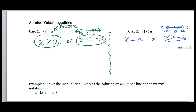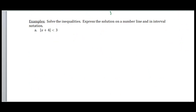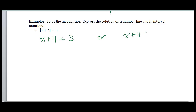Let's look at some examples. When we have these examples, we're going to write our solution or express our solution on a number line and in interval notation. Example one: absolute value of x plus 4 is less than 3. My first inequality that I'm going to make without the absolute value symbol is going to look very similar. So I'm going to have x plus 4 is less than 3, or x plus 4 is going to be greater than negative 3. Those are my two inequalities that no longer have an absolute value.